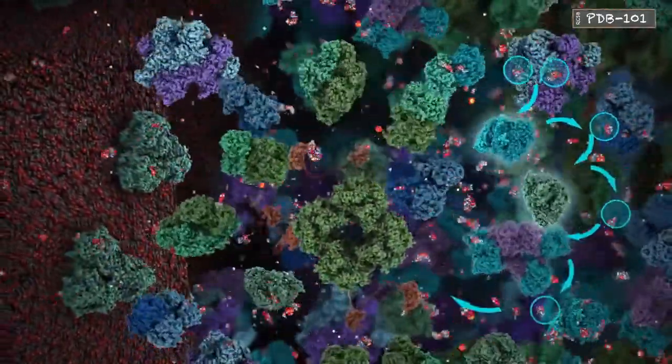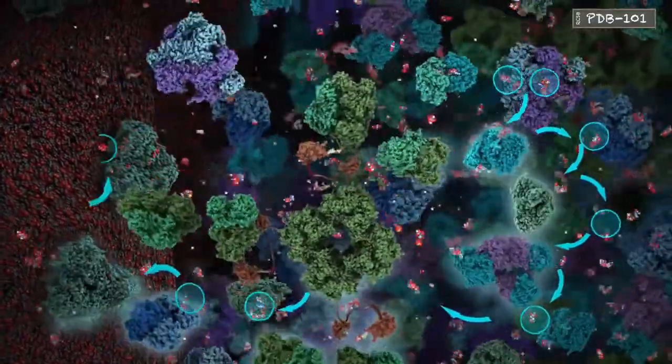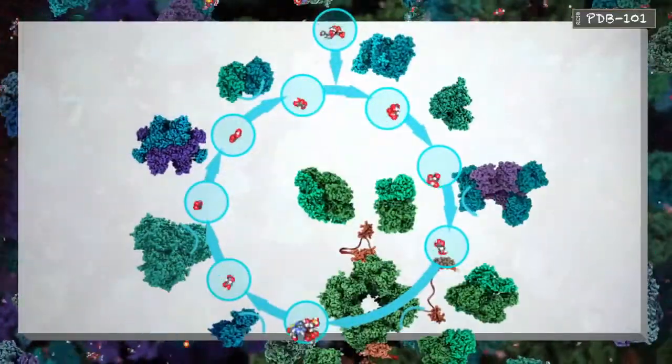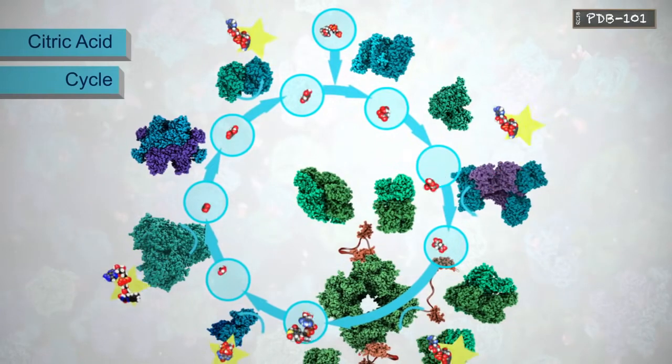These enzymes often work together to form longer pathways, such as the citric acid cycle, which is a series of chemical reactions used by cells to generate energy from carbohydrates.